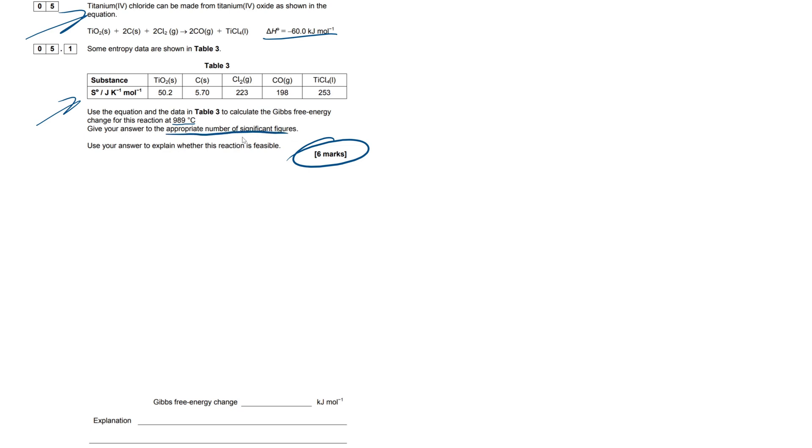Now we have a typical data table here of our entropy of our reactants and products and we have to use the equation to calculate Gibbs free energy in this reaction at 989 degrees Celsius and we have to give our answer to the appropriate number of significant figures. So AQA loves this, what is the appropriate number? So this is 3 sig figs, this is 3, this is 3, this is 3. So I'd stick with 3 throughout this. Even though this is technically 2, stick with 3 to be on the safe side. And we have to use our answer to explain whether this reaction is feasible. Now there's a very simple one liner that I'm going to show at the end of this question. Just memorise it and you'll always be able to input it into your answer.